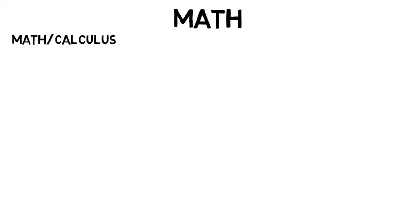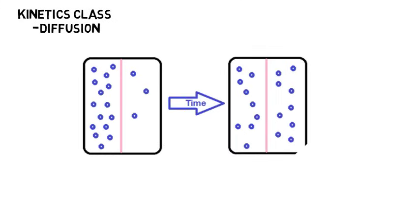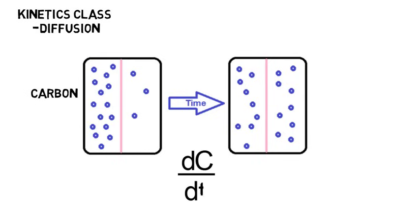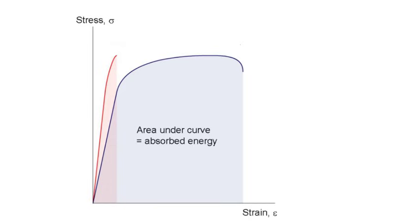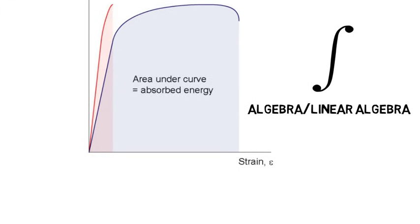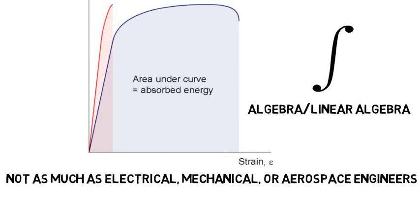For those wondering how much math you see during college: there is math and calculus, but it's not the majority of the curriculum. For example, in a kinetics class you'll learn about diffusion and how atoms move throughout a material. If you have a high concentration of carbon, representing how the concentration changes over time requires calculus, because the rate of change is not constant. Or remember the stress-strain curve? The area under it is the energy absorbed, and that involves an integral. There is also algebra and linear algebra, but it's definitely not as much higher-level math as an electrical, mechanical, or aerospace engineer might see. There's also a lot of chemistry within your materials engineering classes. If you struggle with math, expect it in this major and be ready for it — but you should be able to handle it.